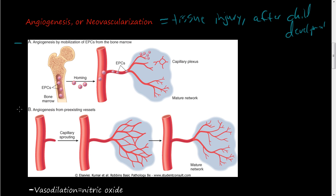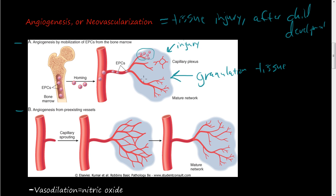There are two ways that angiogenesis happens. First, angiogenesis by mobilization of EPC cells from the bone marrow. Little is known about this, but there is evidence supporting the theory that these EPC cells from the bone marrow are somehow attracted to injury, come out, and camp in the granulation tissue — that pink, soft, new tissue that forms around a scab or scar — acting as roadmaps for new blood vessels being formed.